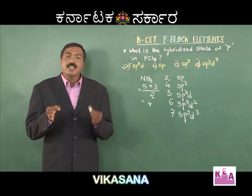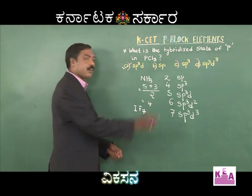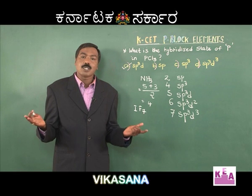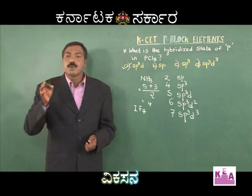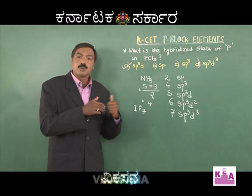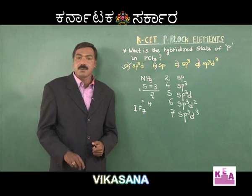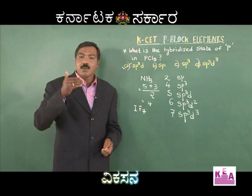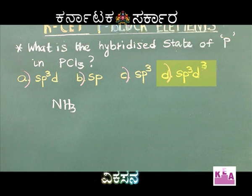To train you further — consider iodine heptafluoride. I don't need to know the atomic number of iodine; I only need to know which group it belongs to. Iodine belongs to group 17, so it has seven valence electrons. Fluorine is monovalent; there are seven fluorine atoms. Seven plus seven equals fourteen; fourteen divided by two is seven. Therefore the hybridization is sp3d3. Never make a mistake in calculating hybridization state.